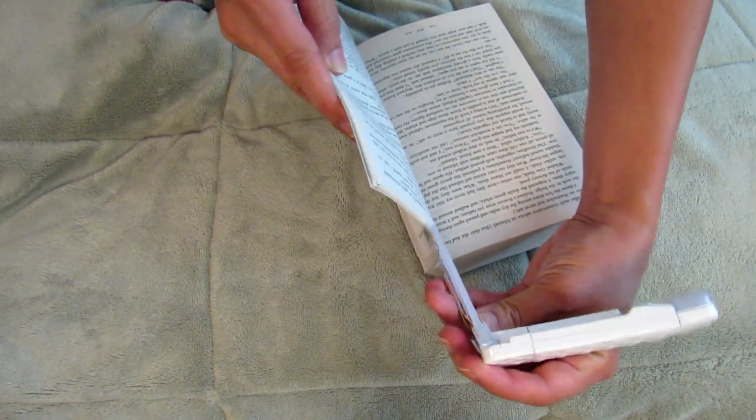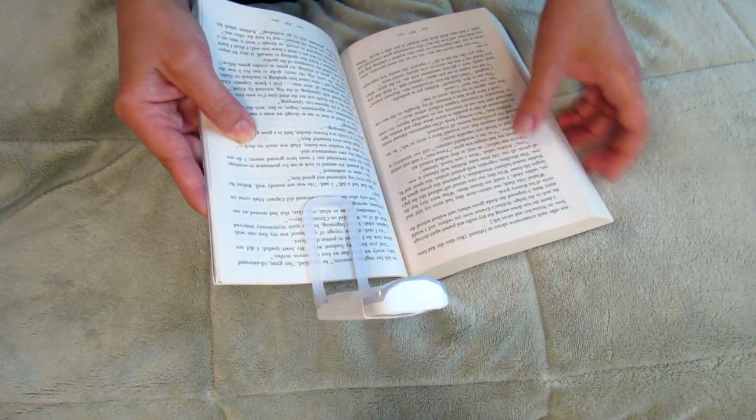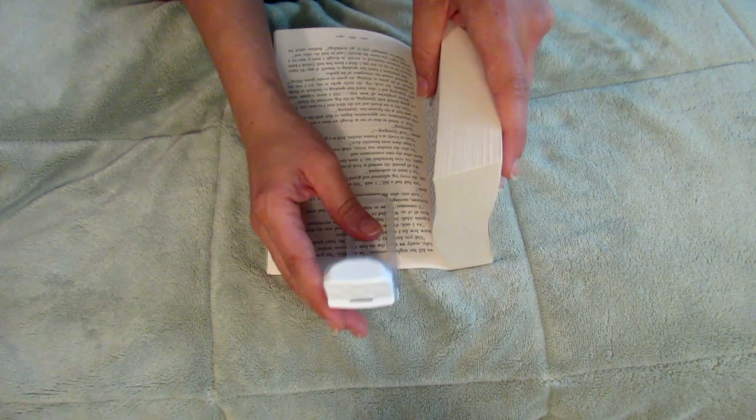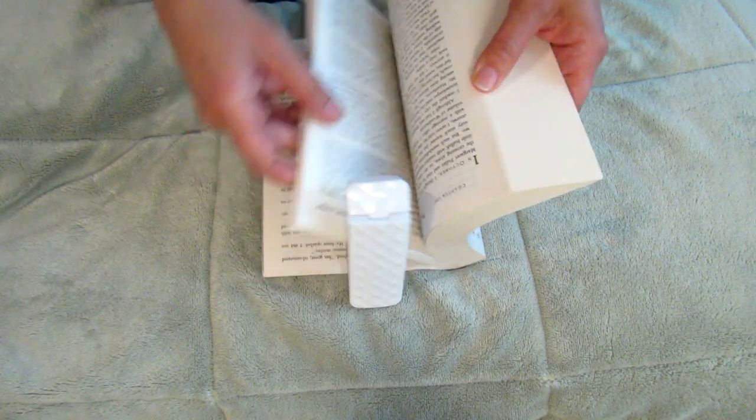You take like sort of the last maybe 10 pages or so and the back cover and you just slide this on there like that and then you can tilt it down like that however you want. You just want to not tilt it too far down because then it's hard to turn the pages. You want it to be kind of like more like that.